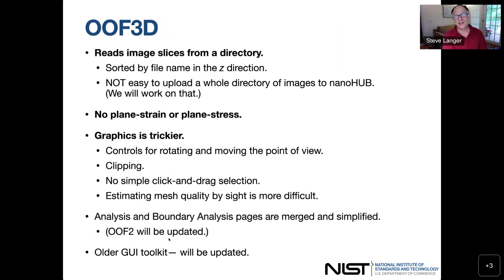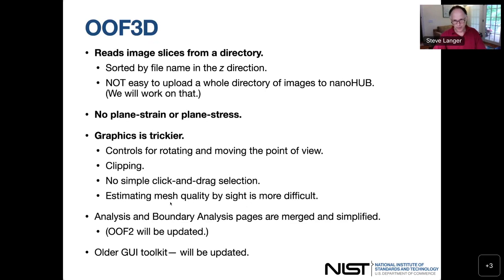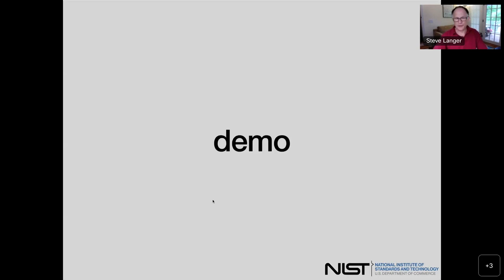OOF3D doesn't read a single image — it reads a directory full of image slices sorted by file name in the Z direction. At the moment it's not easy to upload a whole directory of images to NanoHub, but we'll work on solutions to that. There's no plane strain or plane stress equivalence in 3D. In 3D, the graphics is trickier, with controls for rotating, moving the point of view, and clipping so you can see inside the system. Some of the user interface has been simplified in OOF3D, but currently OOF3D is using an older version of the GUI toolkit.